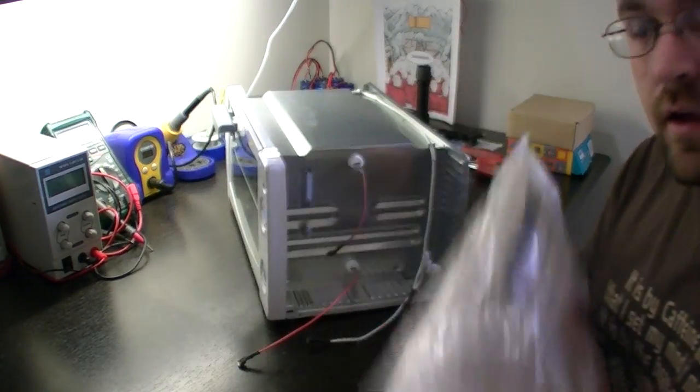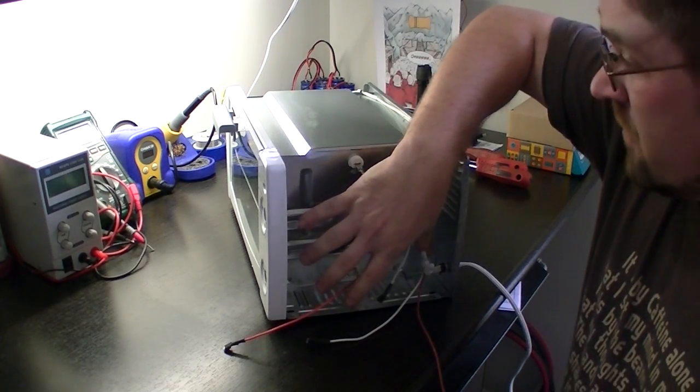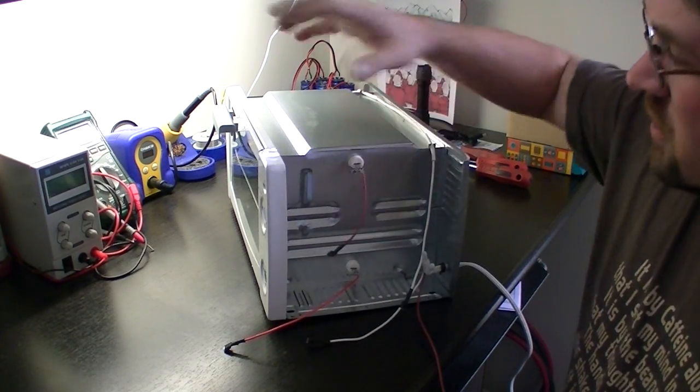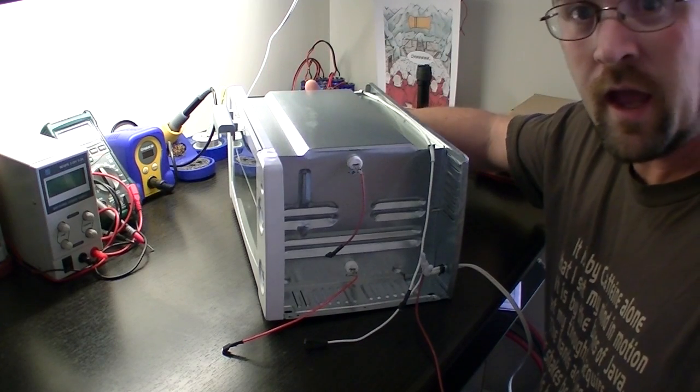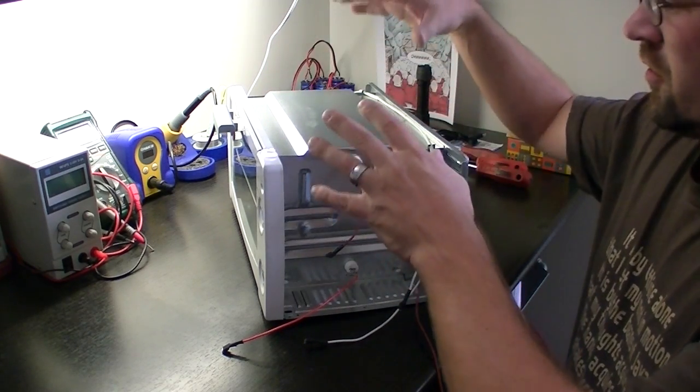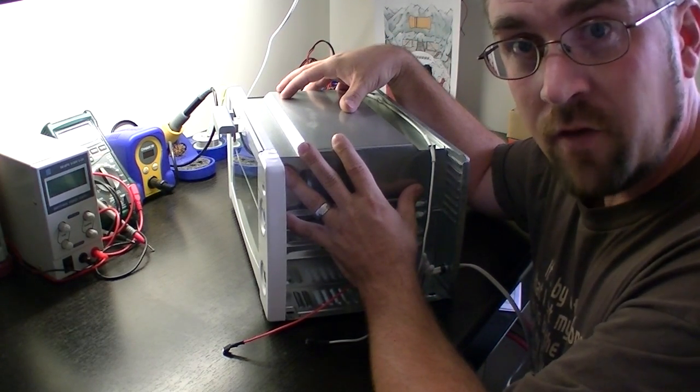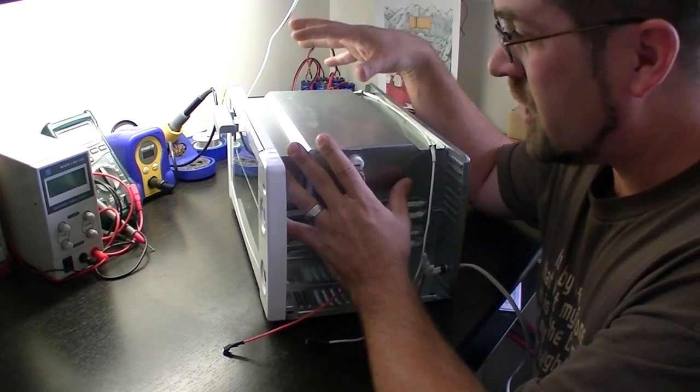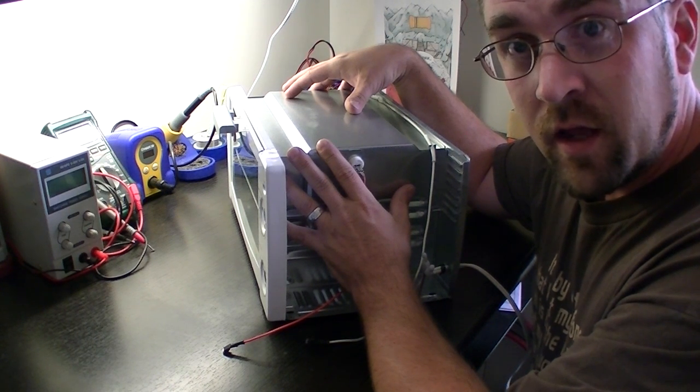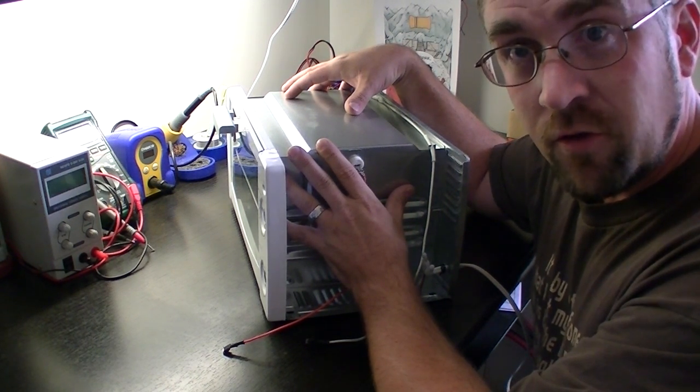We're going to take our insulating blanket cut it length of it so this way it covers the side the top and the other side. This will help retain the heat in the box a little bit better. This will keep hot spots from forming and will make it run more efficiently so you don't have to use as much power.